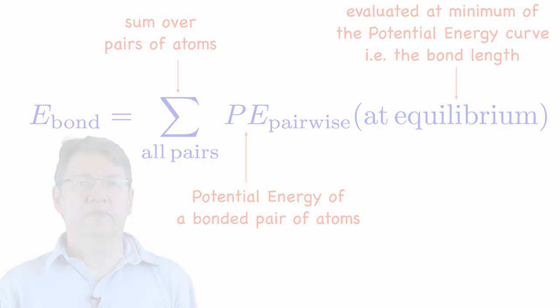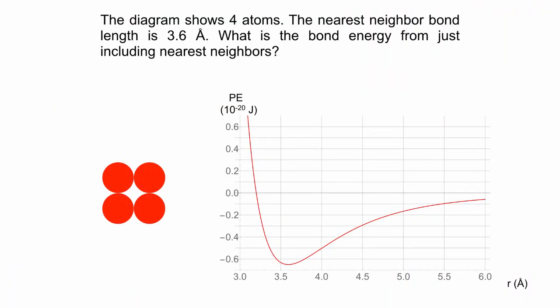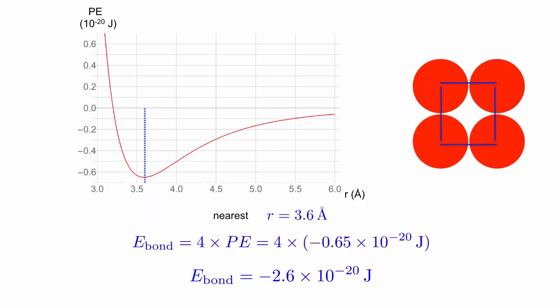Let's see how it works in a simple example. We have four atoms, and we want to find the bond energy when we just include nearest neighbors. If we draw in all the nearest neighbor bonds, we can see that there are four of these bonds. At equilibrium, the bond length corresponds to the value of r where the potential is minimized, which is at 3.6 angstroms.